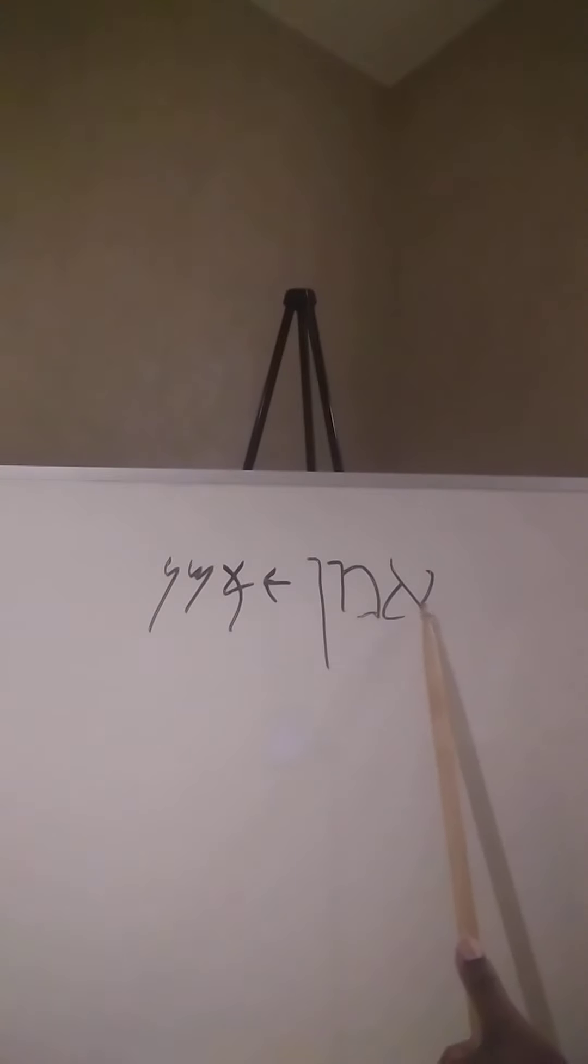When you see this here, it's the Aleph, the Mem, and the Nun. In modern terms they would say Nun Sophie. This right here simply is an arrow saying from one to the other. This is the Aleph, the Mem, and the Nun and what they refer to as Ancient Hebrew.